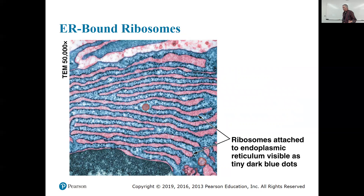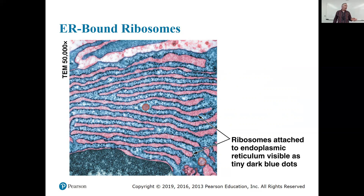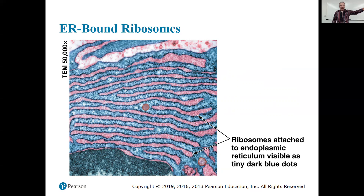The endoplasmic reticulum is a long series of back-and-forth membranes with a space in between. It's called the rough ER because under the microscope it looks rough — it's studded all along with ribosomes. Dangerous proteins, like digestive proteins, are made in that protective space, and also proteins secreted from the cell, like protein hormones, are made in the rough ER.